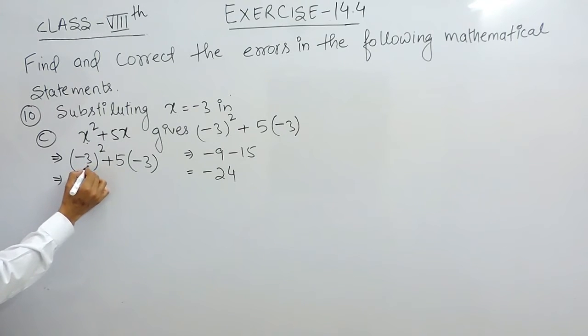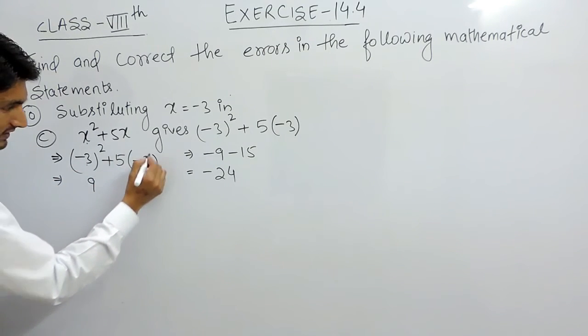This is 3 squared, which means 3 into 3, which is 9. I have already told you that whenever the power is even, this negative sign gets changed into positive, so this should give plus 9.